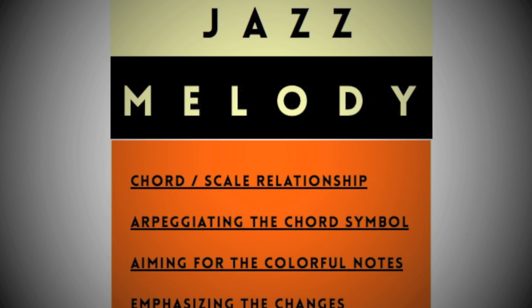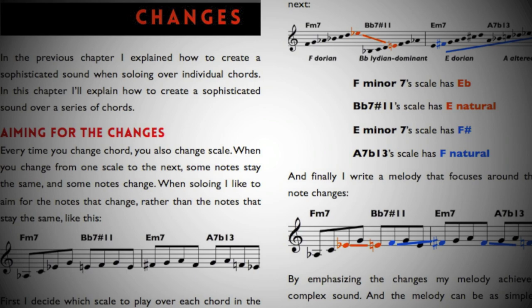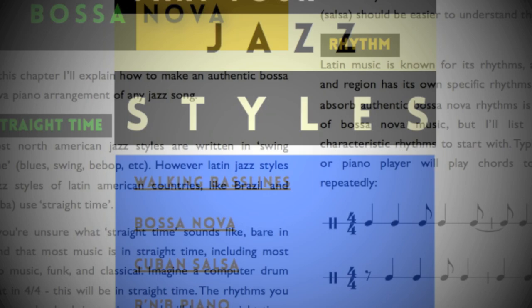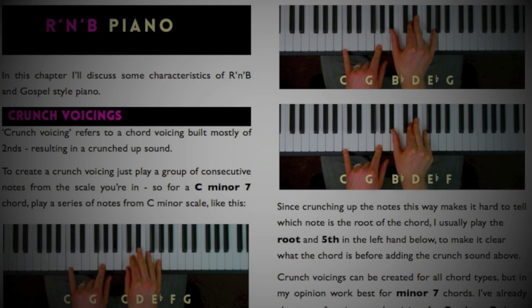The third section is on melody — whether you're improvising or composing a melody. This section covers things like scales, knowing which scale to play over any type of chord, as well as other melodic techniques. The fourth section is dedicated to jazz styles: bossa nova piano style, Cuban salsa piano style, R&B piano style, as well as how to write walking bass lines.